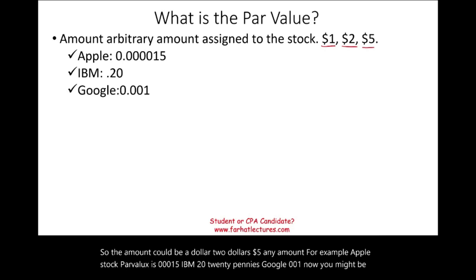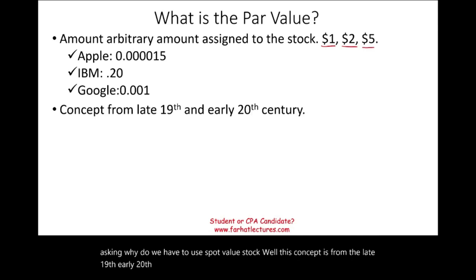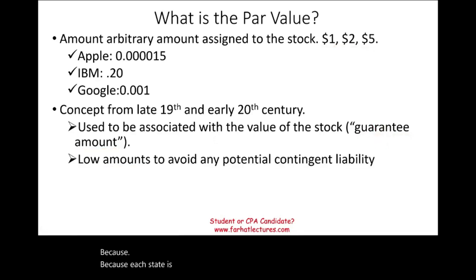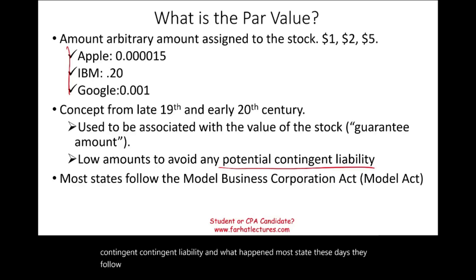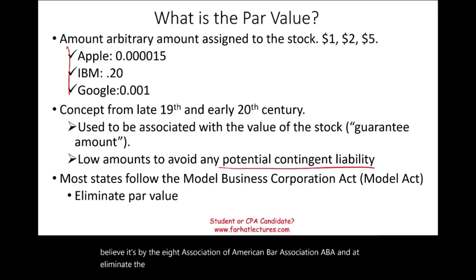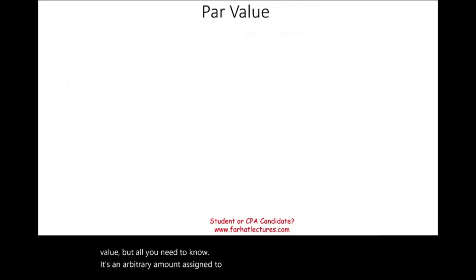Why do we use par value stock? This concept is from the late 19th and early 20th century — it used to be associated with the value of the stock, a kind of contingent or guaranteed amount. That's no longer the case. Companies choose very low par amounts to avoid any potential contingent liability. Most states now follow the Model Business Corporation Act by the American Bar Association, which eliminates the par value concept. So it's simply an arbitrary amount assigned to the stock.